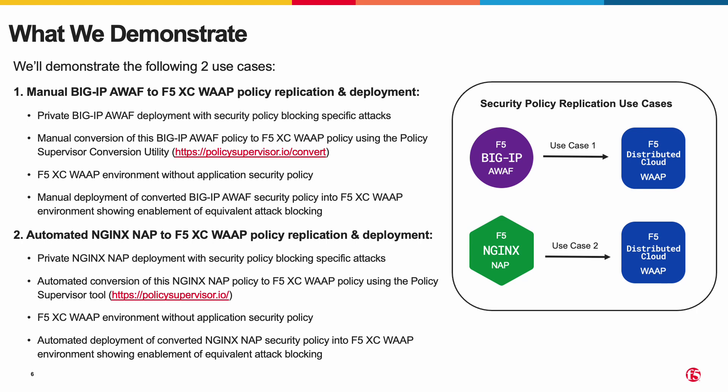Use Case 2: Automated NGINX AppProtect to F5 Distributed Cloud WAF Policy Replication and Deployment. We'll show a private NGINX AppProtect deployment with a security policy blocking specific attacks, followed by an automated conversion of this NGINX AppProtect policy to an F5 Distributed Cloud WAF policy using the Policy Supervisor tool. We'll show an F5 Distributed Cloud WAF environment without an application security policy, then show an automated deployment of the converted NGINX NAP security policy demonstrating enablement of an equivalent attack blocking capability.